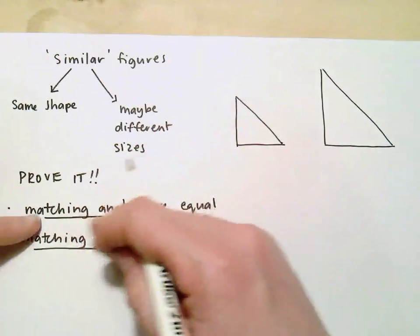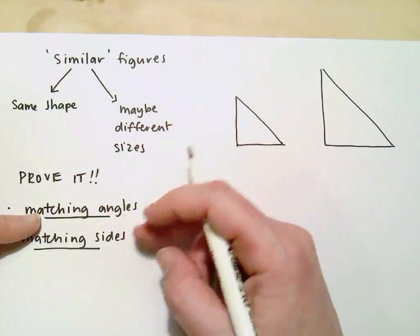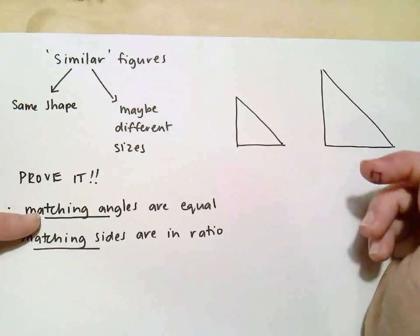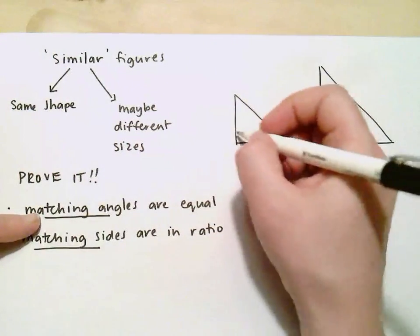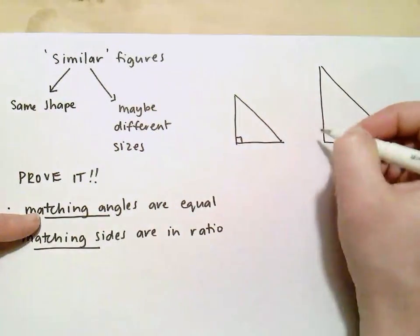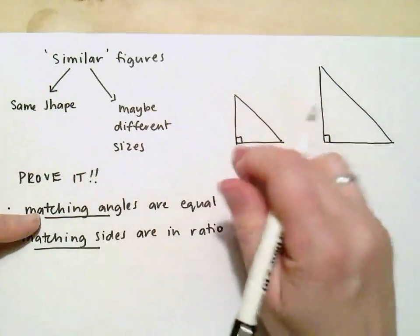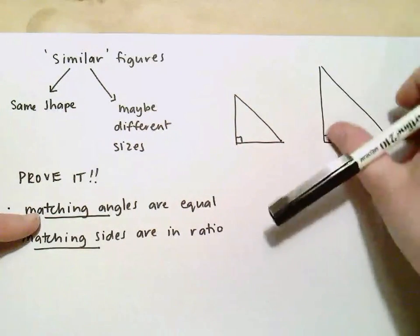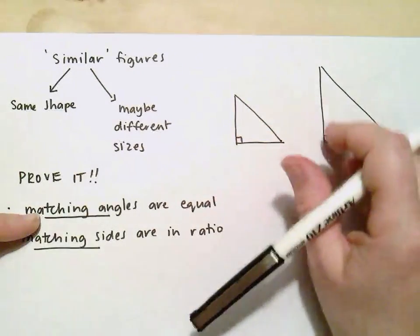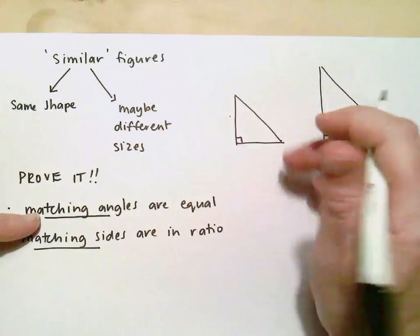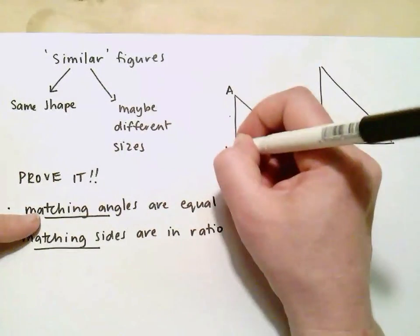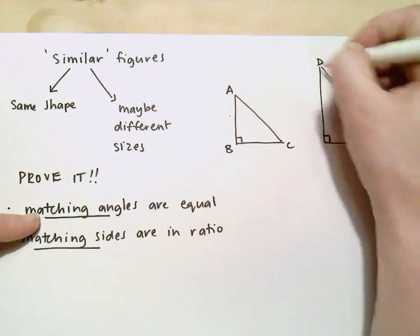When we're talking about matching angles we're talking about angles that are in the same location on the triangle. So you can see pretty clearly that I'm going to pretend that I know that these are right angles. But you can see that these are in the same location on this triangle. Now I could have these rotated but I'd still be saying they are between these two sides. So if I label this ABC and this one DEF,